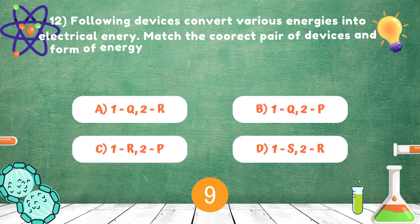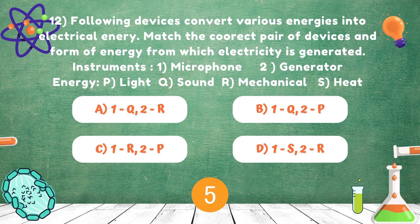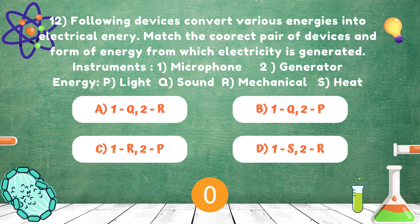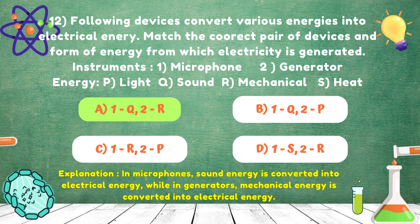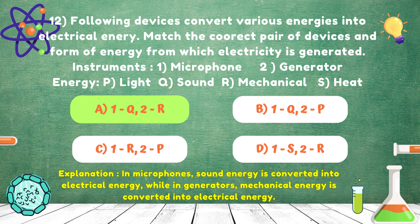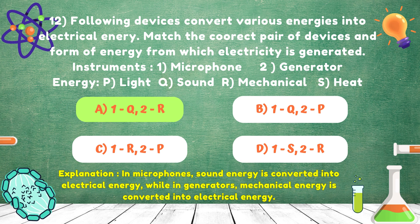Following devices convert various energies into electrical energy. Match the correct pair of devices and form of energy from which electricity is generated. Instruments: 1 Microphone, 2 Generator. Energy: P Light, Q Sound, R Mechanical. Answer is Option A.